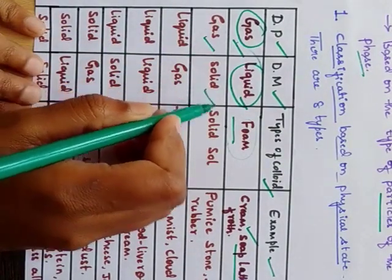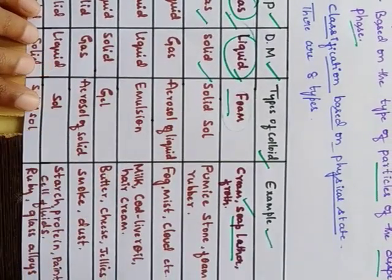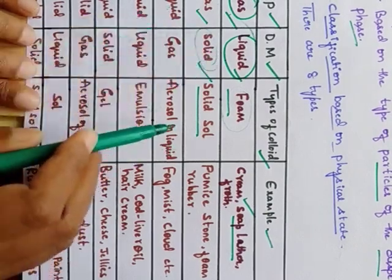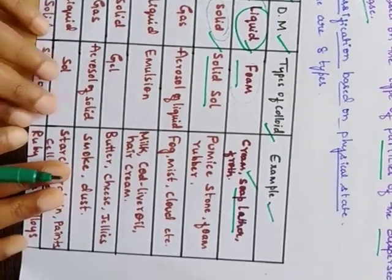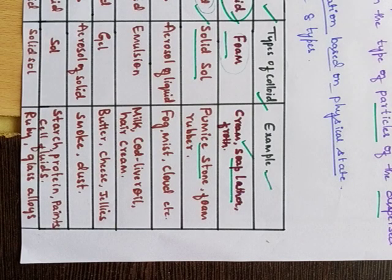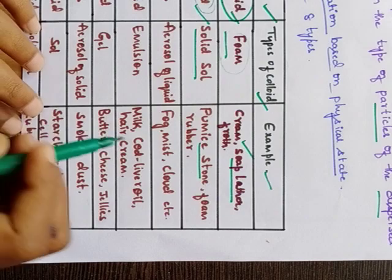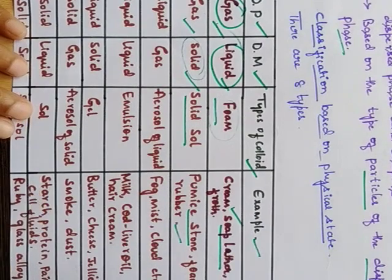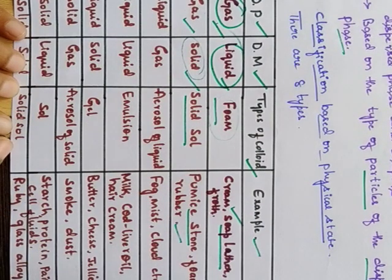In a solid sol, the dispersed phase is gas and the dispersion medium is solid. Examples include pumice stone (colored stones where gas is trapped within a solid), and foam rubber. Gas mixed into a solid gives a colloid called solid sol. Note that a gas-gas mixture is not included here, because mixing two gases always produces a homogeneous mixture, which is a true solution and not a colloid.